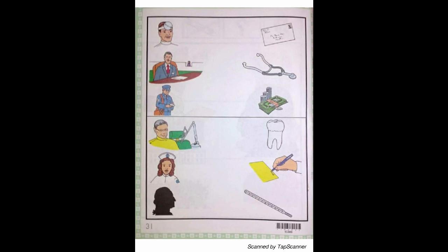Draw a line from the dentist to the tooth. The postman, the banker, and the lawyer are neighborhood helpers too. Bankers help keep our money safe in a bank. Draw a line from the banker to the money. The postman brings us letters from our friends. Draw a line from the postman to the letter.